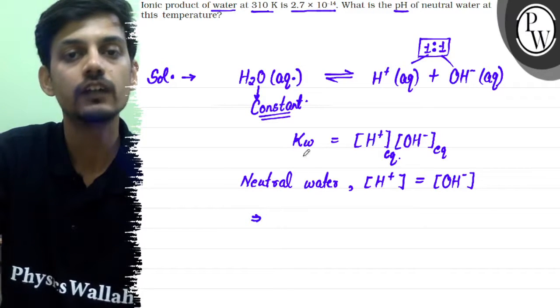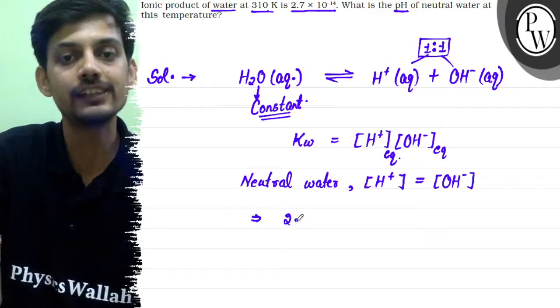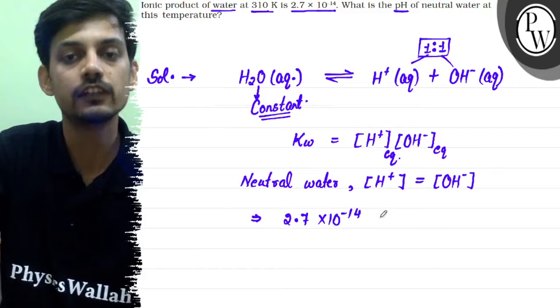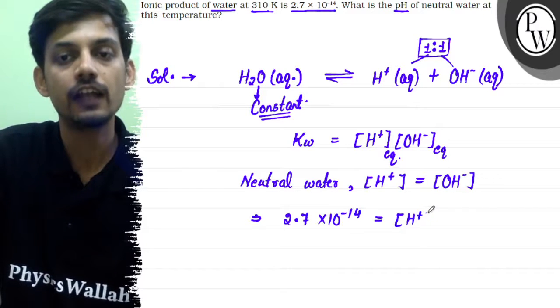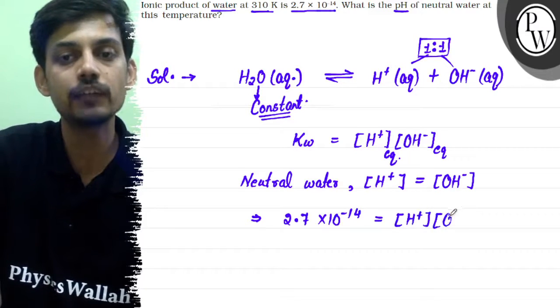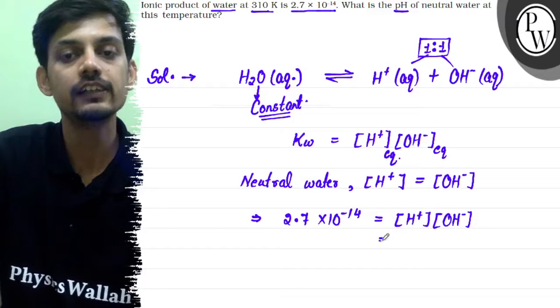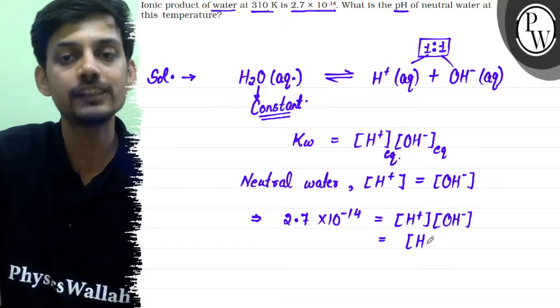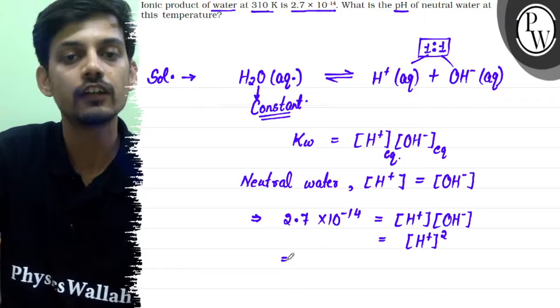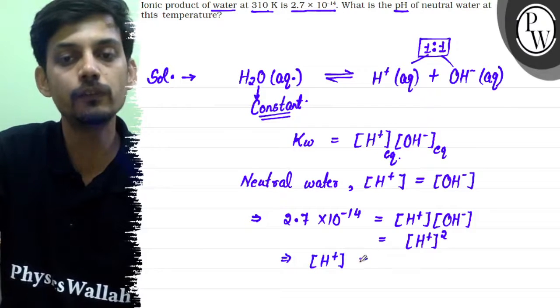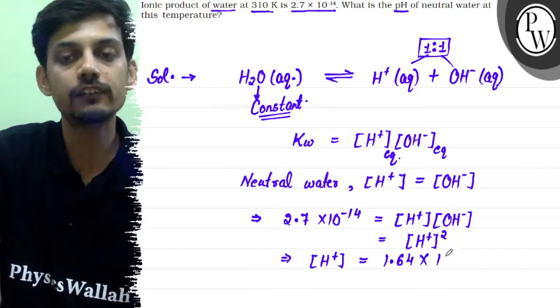Now we can use the equation. kw = 2.7 × 10^-14 equals [H+] concentration. In place of OH-, we can also write H+ concentration. So we can write this as [H+]². From here, [H+] concentration comes out to be √2.7, which is 1.64 × 10^-7 moles per liter.